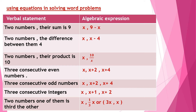If we have three consecutive even numbers, let the first be x, so the second even number is x plus 2, and the third is x plus 4. Three consecutive odd numbers follow the same pattern: x, x plus 2, and x plus 4. For three consecutive integers (not specifically even or odd), the numbers are x, x plus 1, and x plus 2. If one number is a third of the other, let the first be x, so the other is one-third x, giving the pair as x and one-third x, or equivalently 3x and x.